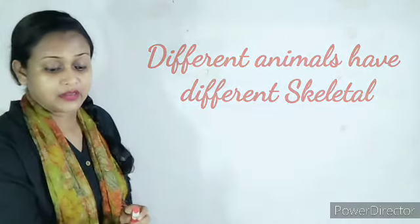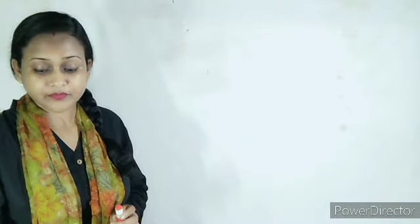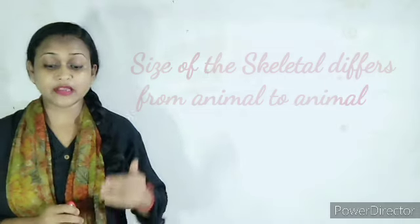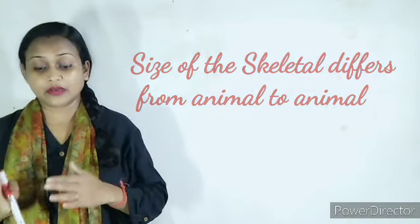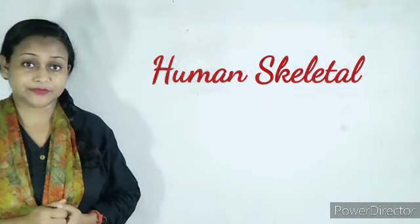The size of the skeleton also varies depending on the age of the animal. For example, the skeleton of a bird will be different from the skeleton of a dog or horse. So different animals will have different types of skeletal systems. Now, moving on to the human skeleton.